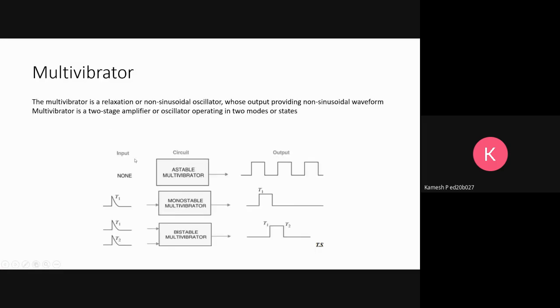Multivibrators. A multivibrator is a relaxation or non-sinusoidal oscillator which oscillates between two states. It is a two-stage amplifier or oscillator operating only in two modes or states. There are three types of multivibrators.